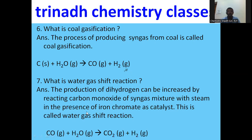What is the water gas shift reaction? The production of dihydrogen can be increased by reacting carbon monoxide from the syngas mixture with steam in the presence of an iron chromate catalyst. This reaction is called the water gas shift reaction, and it improves the production of H₂.